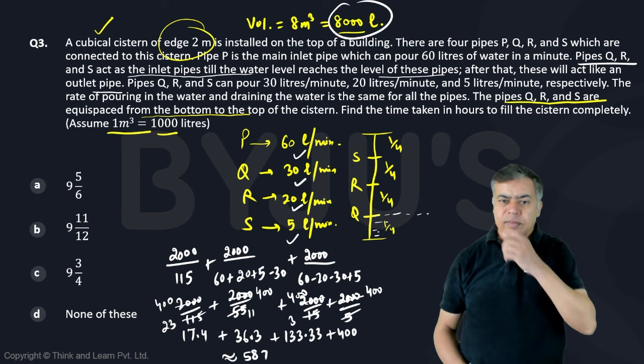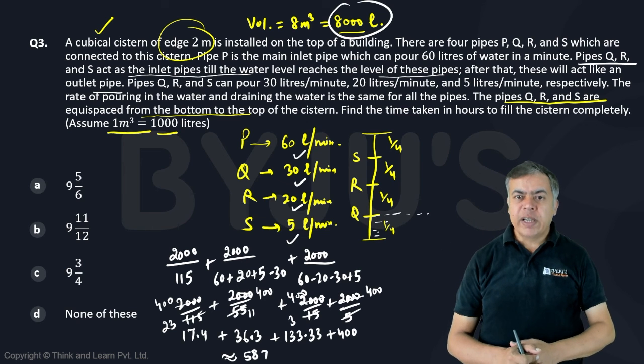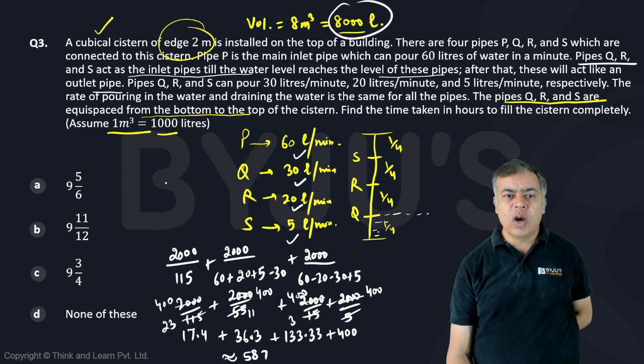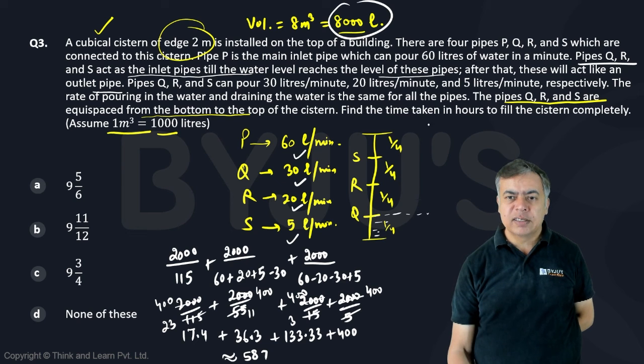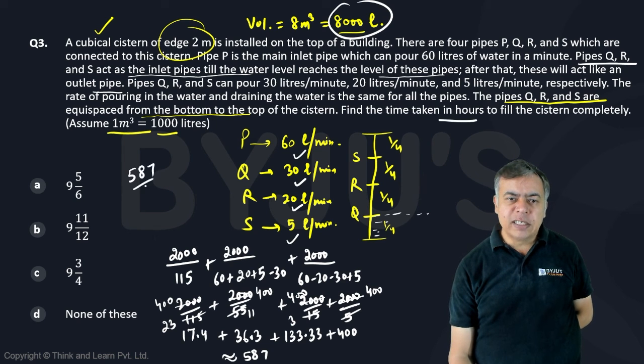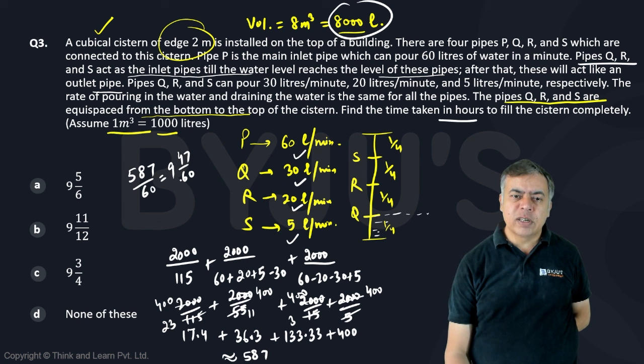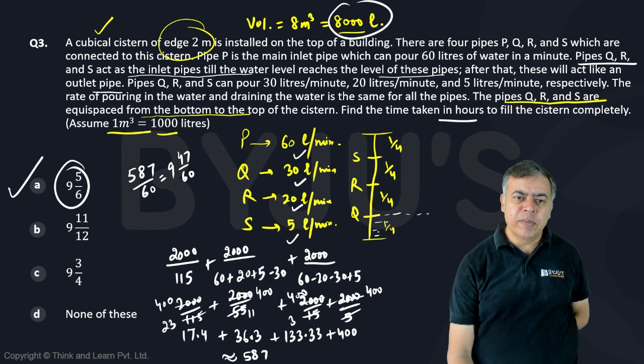Sorry. This is 587 minutes. So I want to convert it to hours because the answer is in hours. So now 587 by 60. So it will be 16 to 9, 540. The remaining is 47 by 60. So the denominator is either 12 or 6. Let us cancel with 6, 10 first. So this will become around 5 by 6. So answer should be this 9, 5 by 6.